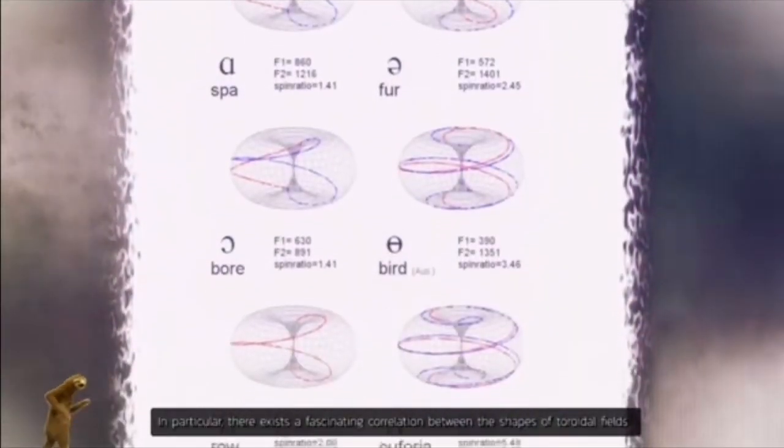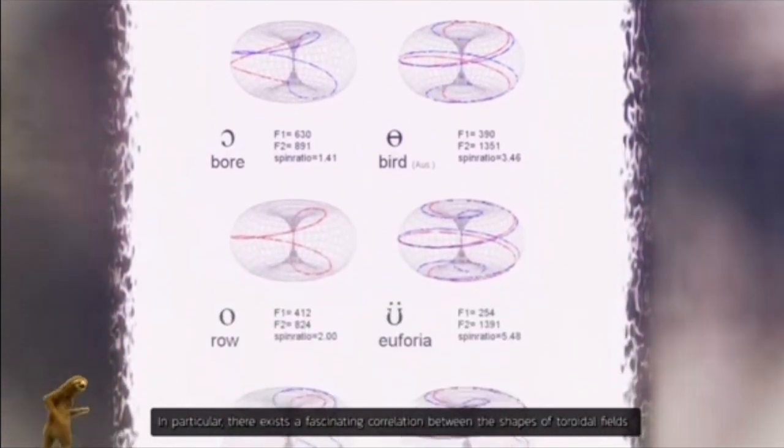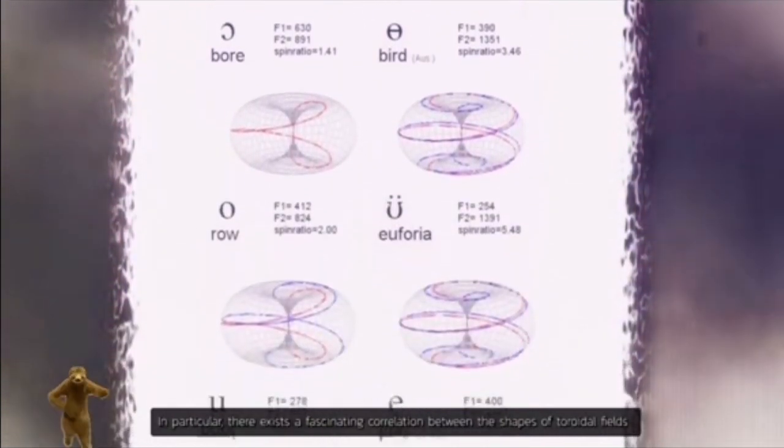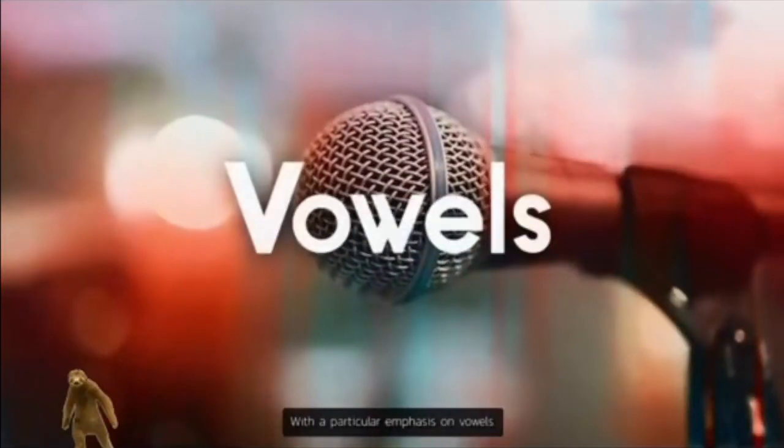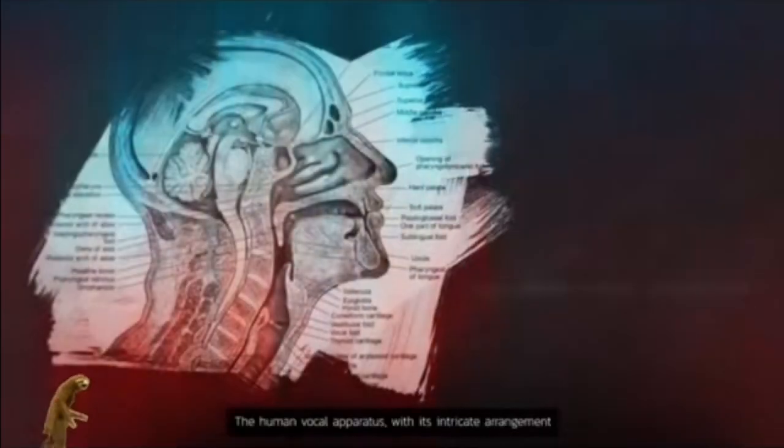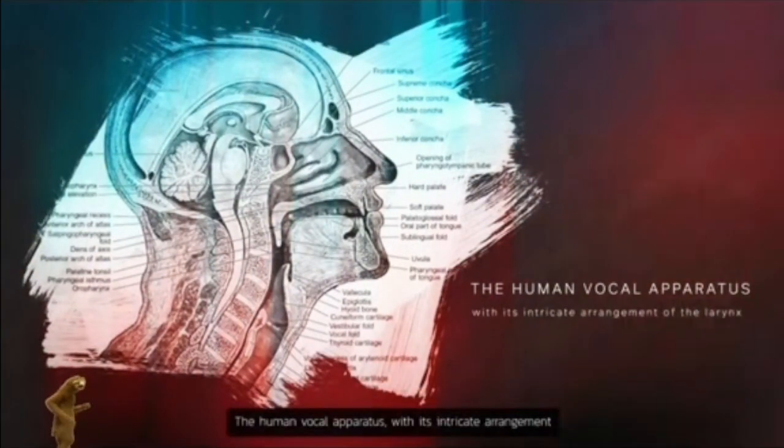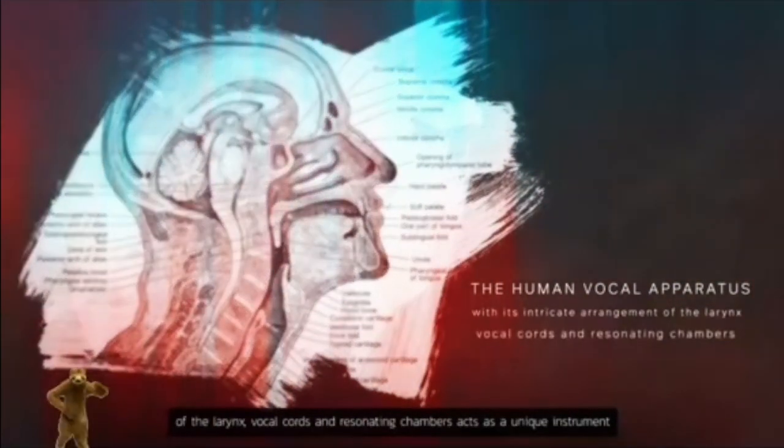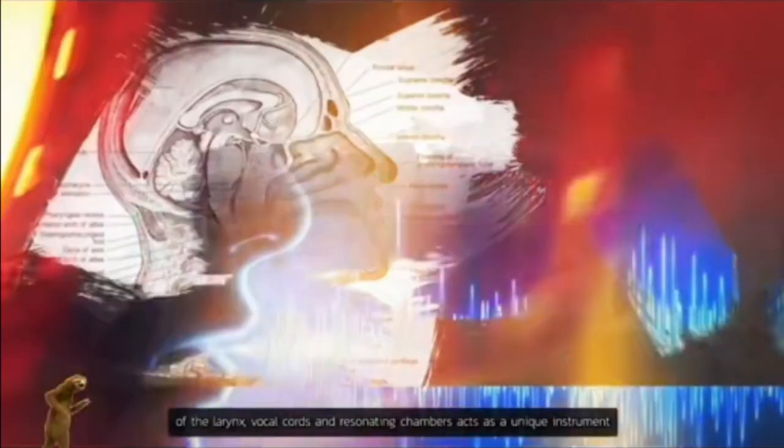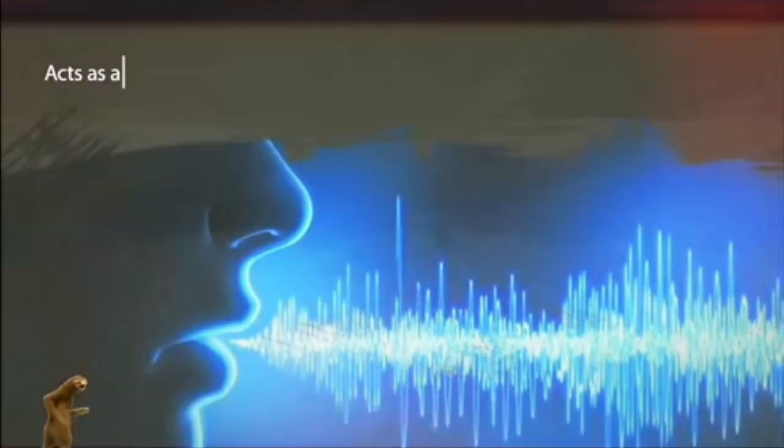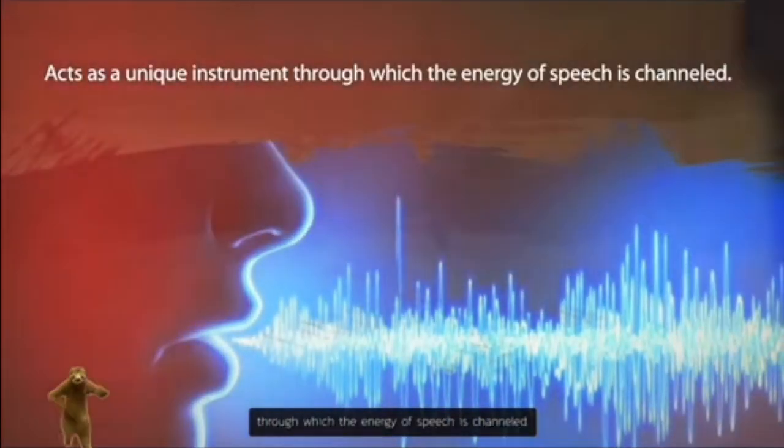In particular, there exists a fascinating correlation between the shapes of toroidal fields and the sounds we produce, with a particular emphasis on vowels. The human vocal apparatus, with its intricate arrangement of the larynx, vocal chords, and resonating chambers, acts as a unique instrument through which the energy of speech is channeled.